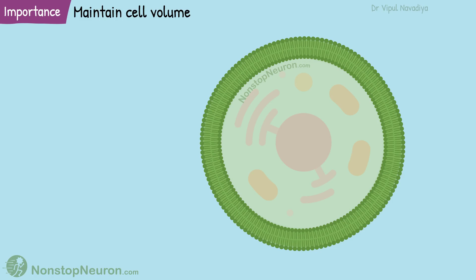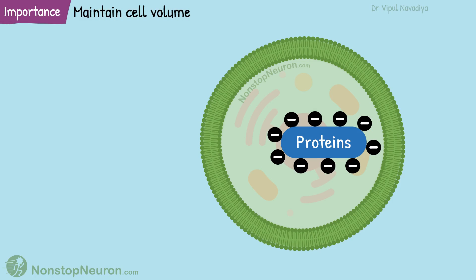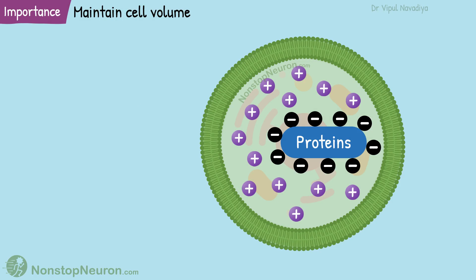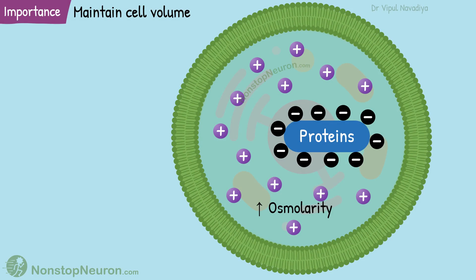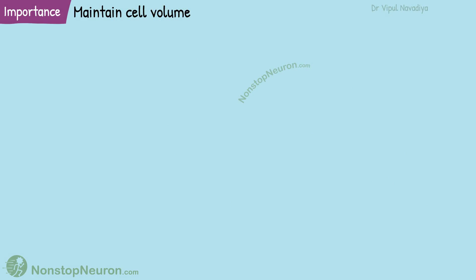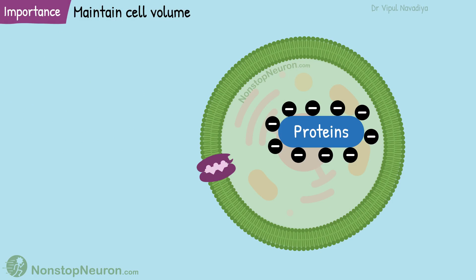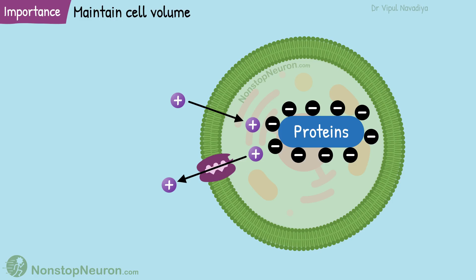The final role: the pump helps maintain cell volume. Inside the cell, we have proteins and some other large organic molecules that cannot move out of the cell — they carry negative charges. So they attract positive ions like sodium and potassium from outside to inside. The entry of these ions tends to increase osmolarity inside the cell, which would bring water in and cause cells to swell. If left unchecked, the cells would continue to swell until they eventually burst. Fortunately, this is prevented by the sodium potassium ATPase pump. The pump takes only two ions in and moves three ions out of the cell, so there is a net movement of one ion out. This extrusion balances the entry of ions, so osmolarity is not affected and cell volume is maintained.